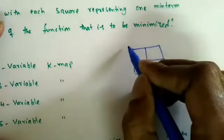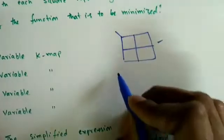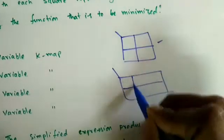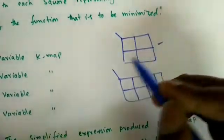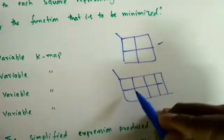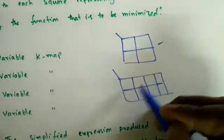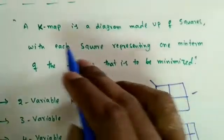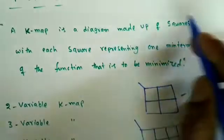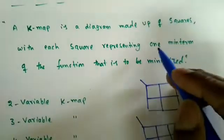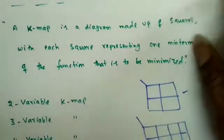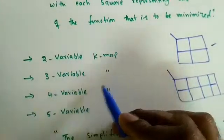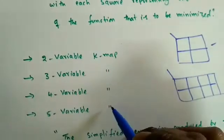The K-map is a diagram made up of squares, with each square representing one minterm of the function to be minimized. For a two-variable map, there are four combinations, so there are four squares. For a three-variable K-map, there are 2³ = eight squares. Once the function values are placed in the squares, we can minimize the Boolean function.